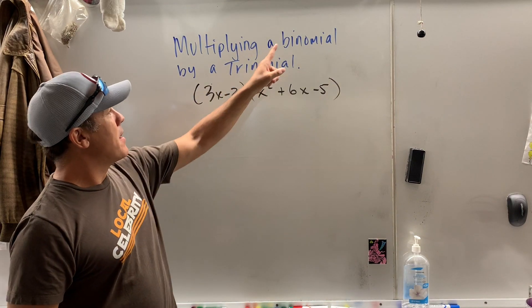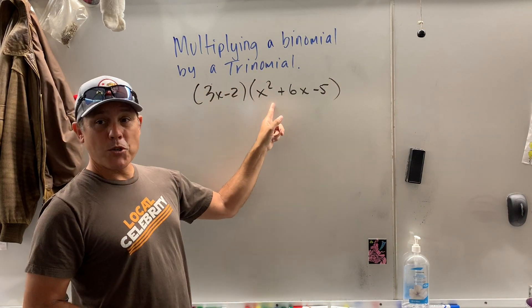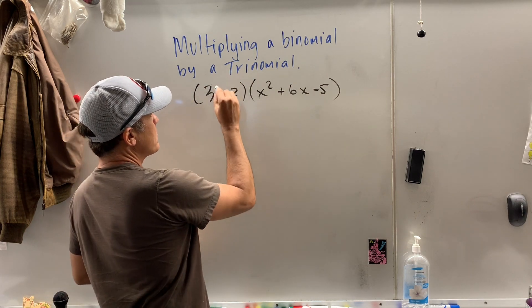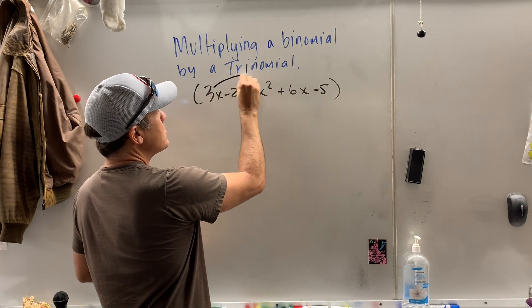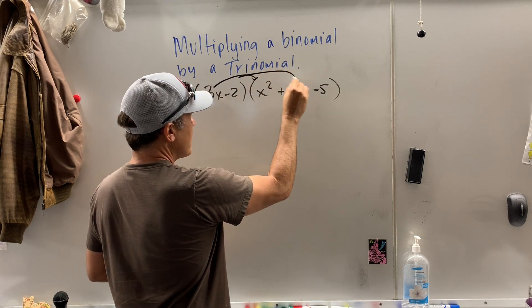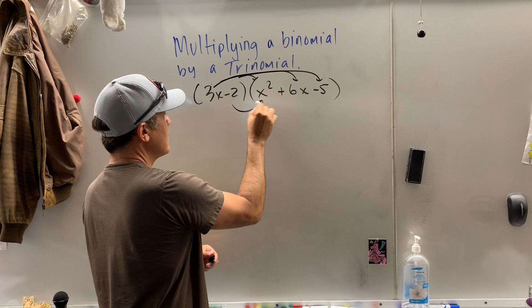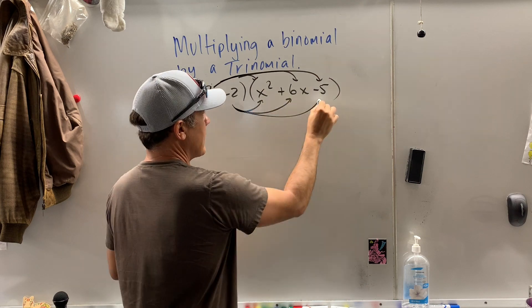All right, we're going to multiply a binomial by a trinomial. To do that, I'm going to distribute the 3x: Dorothy, Toto, and the Tin Man, and then down here, Dorothy, Toto, and the Tin Man.